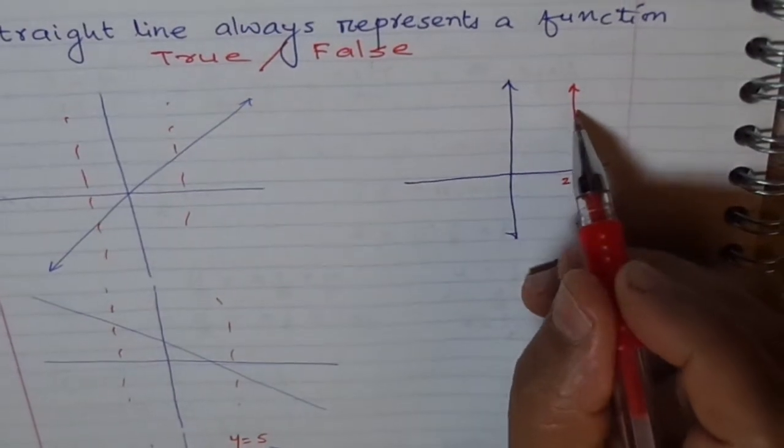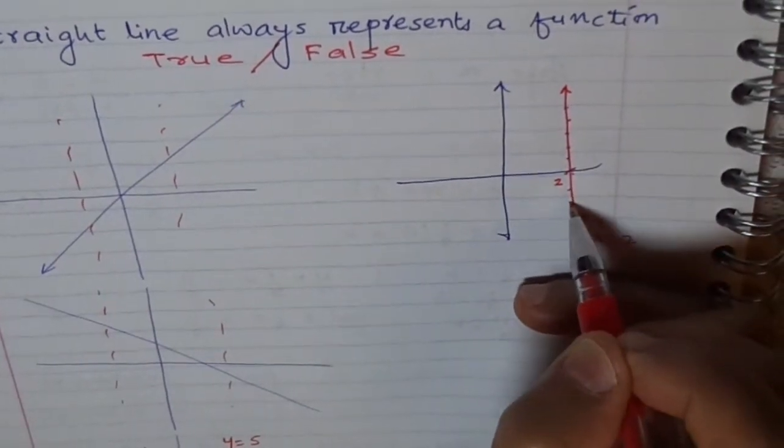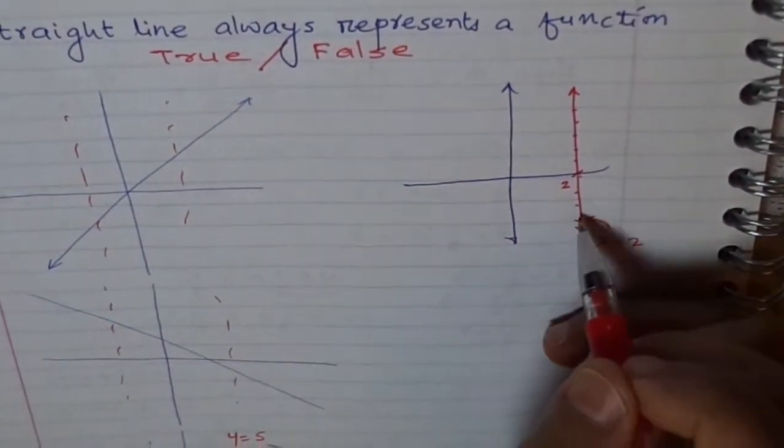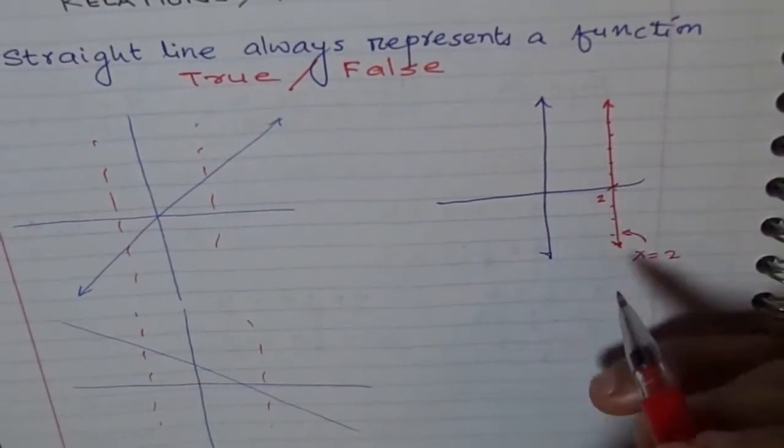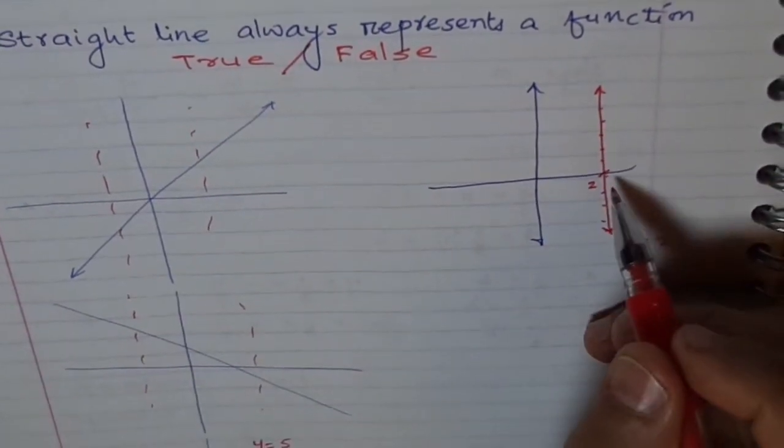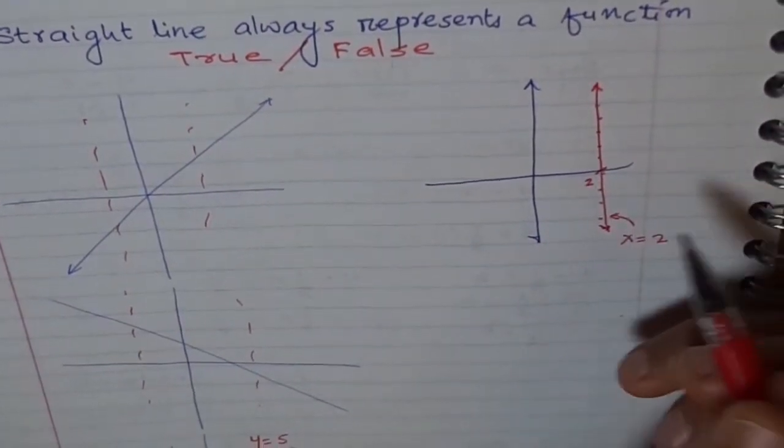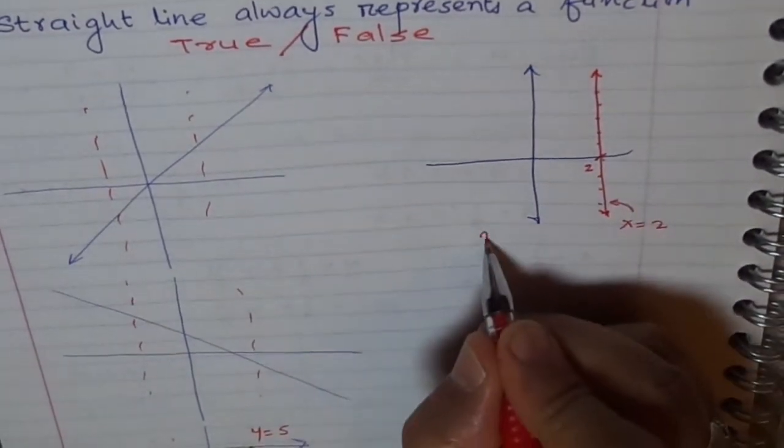For a value of x equals 2, which value of y will you consider? It could be any. An infinite number of values are here which correspond to the same value of x, which is 2. So this is not a function.